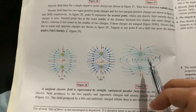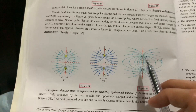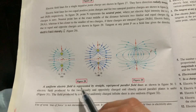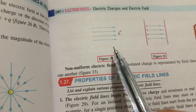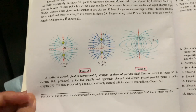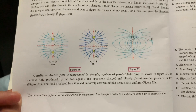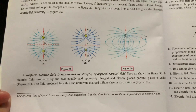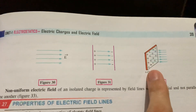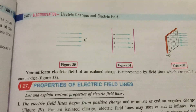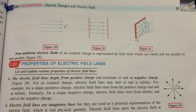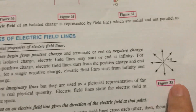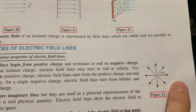Now we will discuss something about types of electric fields. We have two types: one is uniform and the other is non-uniform electric field. A uniform electric field is represented by straight, equally spaced parallel lines as shown in this diagram — you can see the equal spacing. The electric field produced by two equally and oppositely charged, closely spaced parallel plates is uniform, and the field produced by a thin uniformly charged infinite sheet is also uniform. They have given one example here of a sheet showing uniform electric field. The non-uniform electric field of an isolated charge is represented by field lines which are radial and not parallel, as shown in diagram 33.